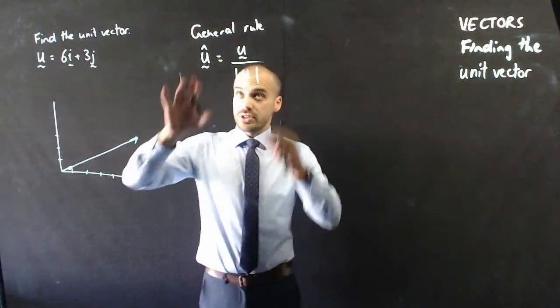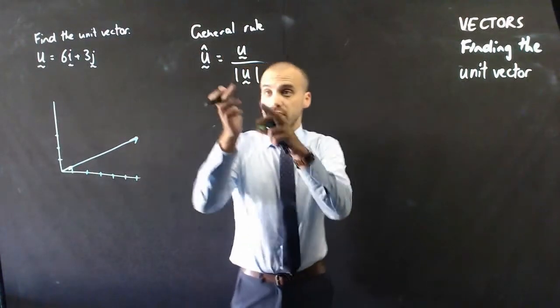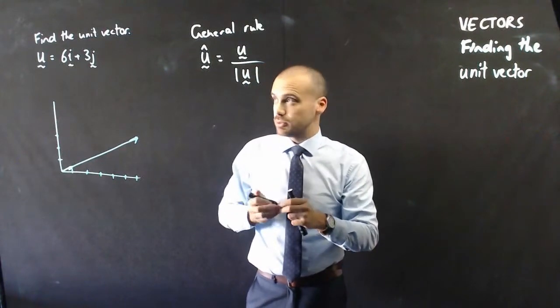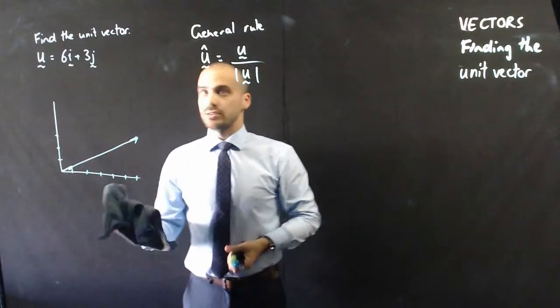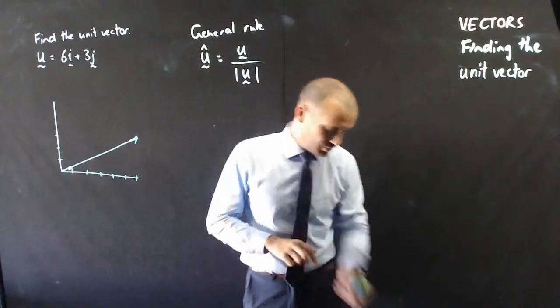So, the first step to finding the unit vector is finding the magnitude and then dividing it by the actual vector itself. Now, we can do all of that in a single step, but probably don't need that. Let's leave it there.